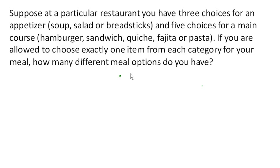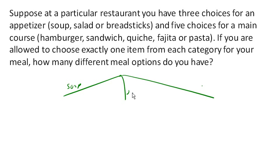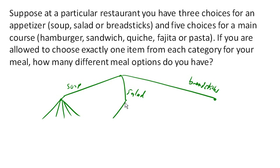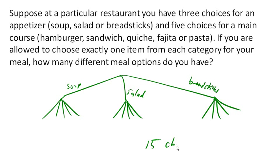So you start out and say, okay, how many choices do I have for my appetizer? I have three choices, so I have three different directions I could go: the soup direction, the salad direction, and the breadsticks direction. Then at each of those points, I have to decide upon a main course, and for each of those I have five choices emanating out. So how many total choices do I have? There are five choices here, another five here, another five there — we end up with a total of 15 choices, and that is how many meal options we have.